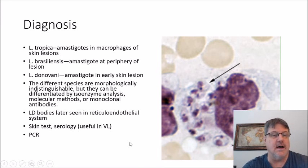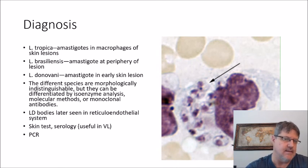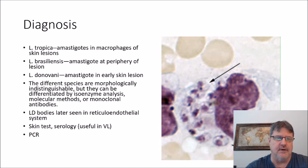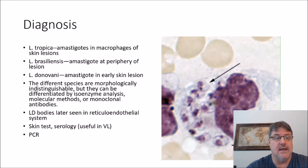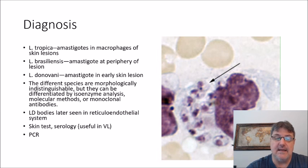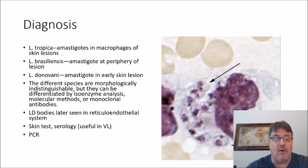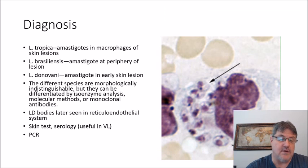The diagnosis is species-dependent. I list three different species here because of the three different forms of disease, though there are a number of other species of Leishmania. For Leishmania tropica, diagnosis involves finding amastigotes in the macrophages of the skin. For Leishmania braziliensis, amastigotes at the periphery of the lesion. And for Leishmania donovani, amastigotes in the early skin lesion. The different species are morphologically indistinguishable but can be differentiated by isoenzyme analysis, molecular methods, or monoclonal antibodies. LD bodies can later be seen in the reticuloendothelial system. There are also skin tests, serologies, and PCR.